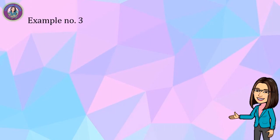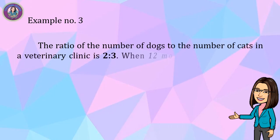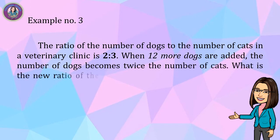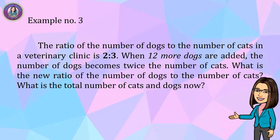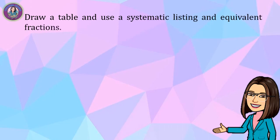Example number three: the ratio of the number of dogs to the number of cats in the veterinary clinic is 2 to 3. When 12 more dogs are added, the number of dogs becomes twice the number of cats. What is the new ratio of dogs to cats, and what is the total number of cats and dogs now? We can draw a table and use systematic listing and equivalent fractions to get the answer.